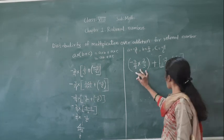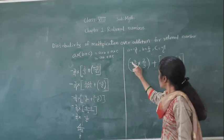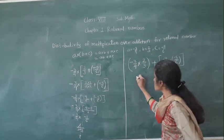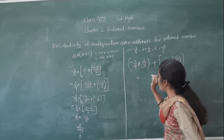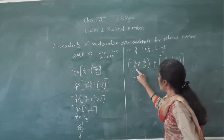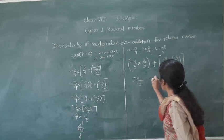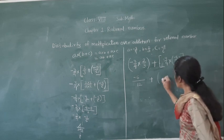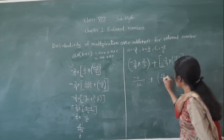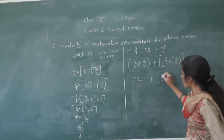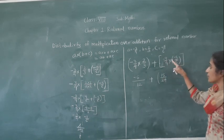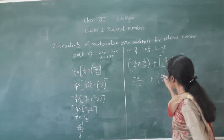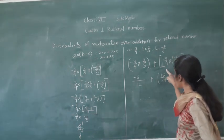Let's solve this: minus 3 into 2 — this number is negative, this is positive, so the product is negative. 3 twos are 6, 4 threes are 12: giving minus 6 upon 12. Plus: minus 3 into minus 5 — when we multiply two negative integers, the product is positive. 3 fives are 15, 4 sixes are 24: giving 15 upon 24.